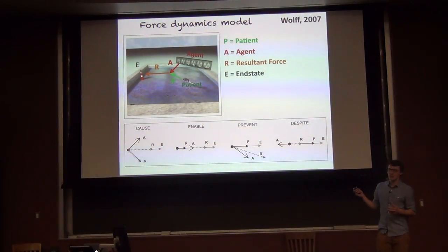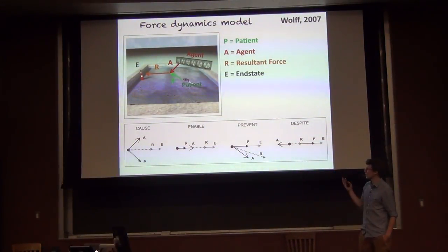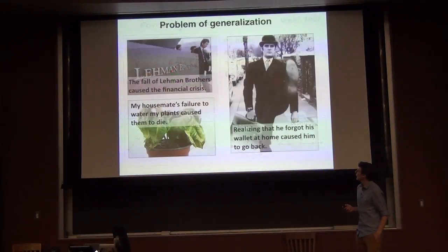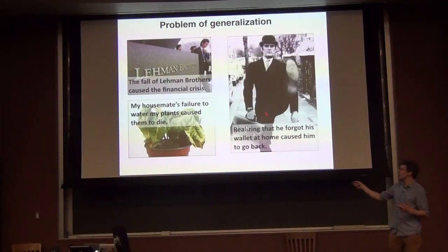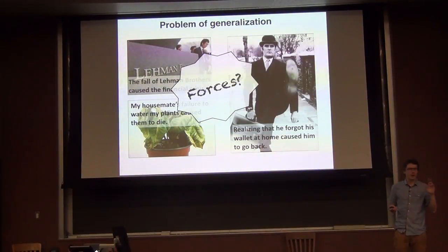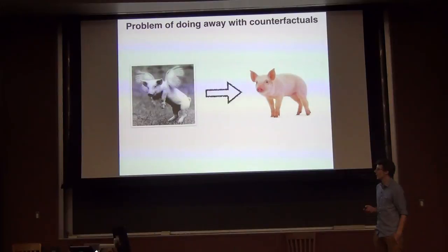We very much liked this work. I remember an email that Josh wrote me saying that Steve Pinker in his book 'Stuff of Thought' writes so much about this work, and Josh wanted Steve Pinker to write a little bit more about our work as well. There were two key problems that we solved. One was the problem of generalization — the stuff about forces seemed cool, but there are examples of causal statements where it's not clear how to think about them in terms of force configurations. The other problem was that we thought it's not going to be possible to do away with counterfactuals — counterfactuals are really crucial for understanding how people make causal judgments.